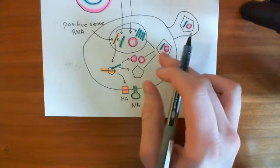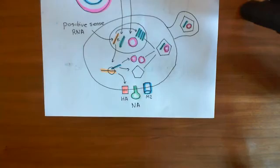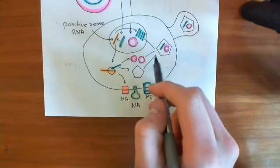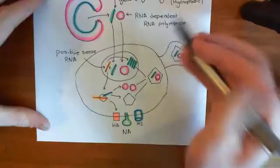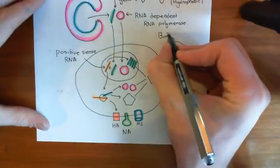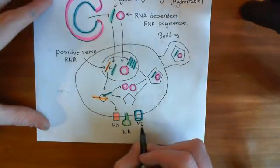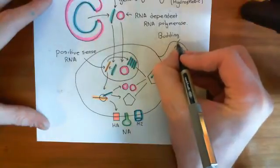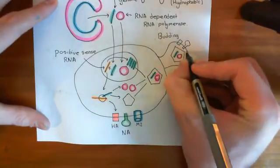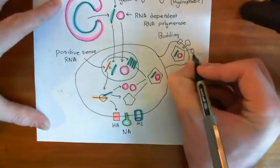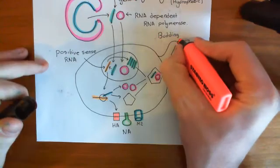We assemble the new virion particles — the new nucleocapsids. We take a piece of negative sense RNA, take an RNA-dependent RNA polymerase, and build a capsid around them to make the nucleocapsid. That pushes out on the membrane in a process known as budding. If we have covered the cell membrane with hemagglutinin, neuraminidase, and M2 proteins, then the virion particle will end up with those proteins in the portion of the membrane that it has taken, getting the proteins it wanted in its viral envelope.